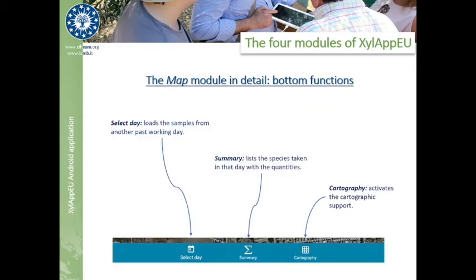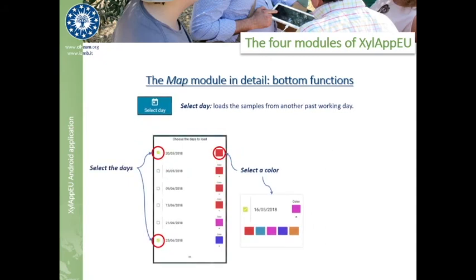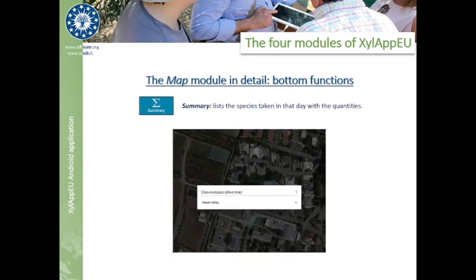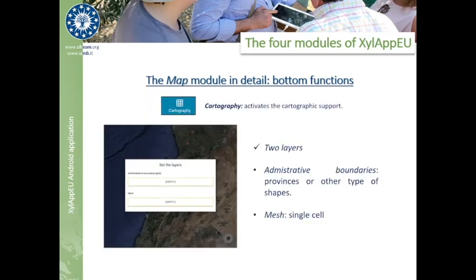In the bottom bar, we find some advanced functionalities that improve the technician's sampling experience. The SELECT DAY function allows the user to load from the tablet's internal memory the samples taken on another day. It is also possible to change the color of each day, with the aim to better distinguish markers on the map. This is useful if we need to continue a pending sampling activity from another day without running into duplicated samples. The SUMMARY button gives us a rapid list of the quantity sampled for each species during the current day. The Cartography module provides two layers on which we can load grids, meshes, and administrative boundaries when available.